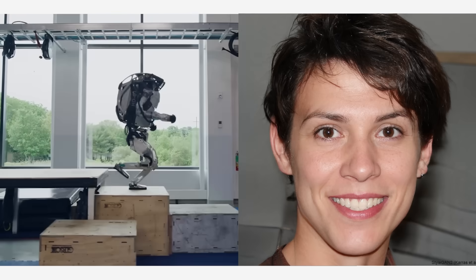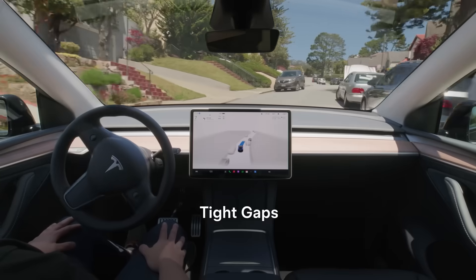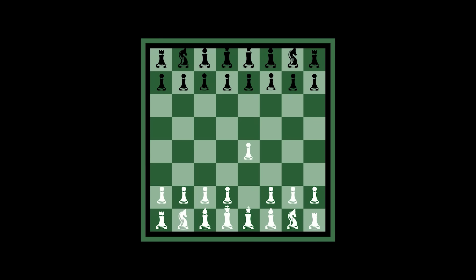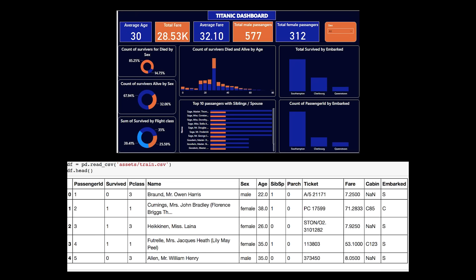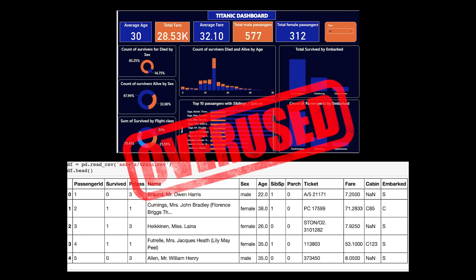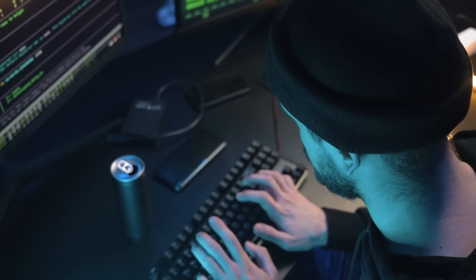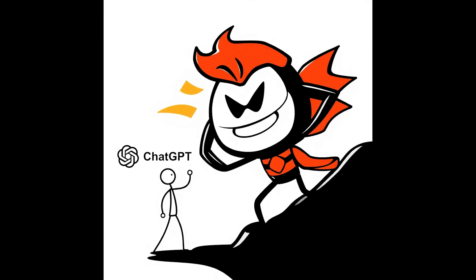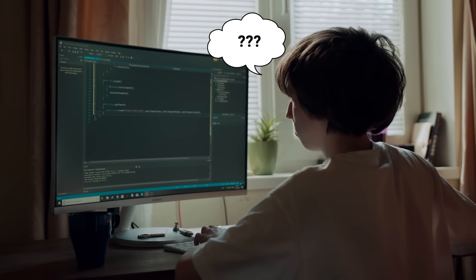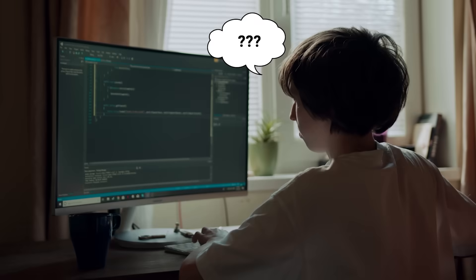You know what's both awesome and terrifying about machine learning? You can basically teach computers to do anything. But here's the problem: most people get stuck building the same boring projects over and over. You know that Titanic dataset that everyone and their grandma has used? You get that late-night motivation where you're ready to build the next ChatGPT killer, but then you end up staring at your screen wondering where to start.